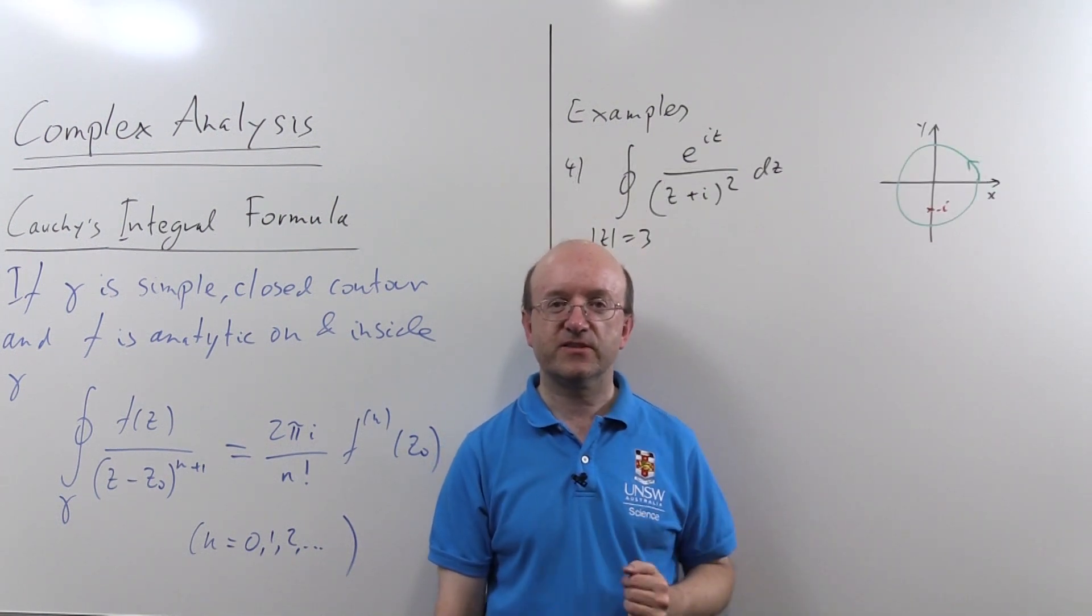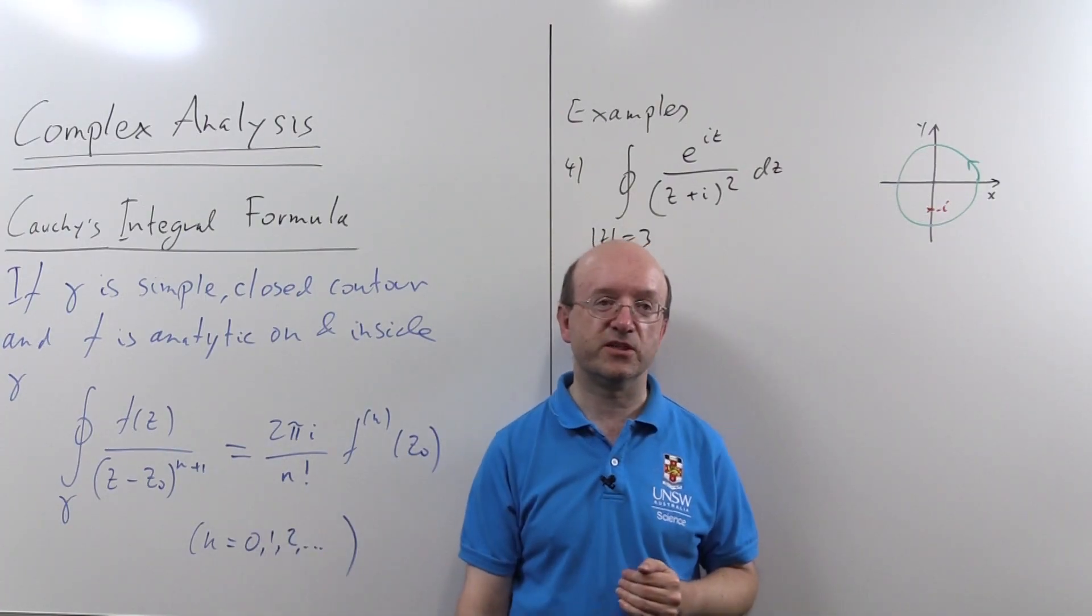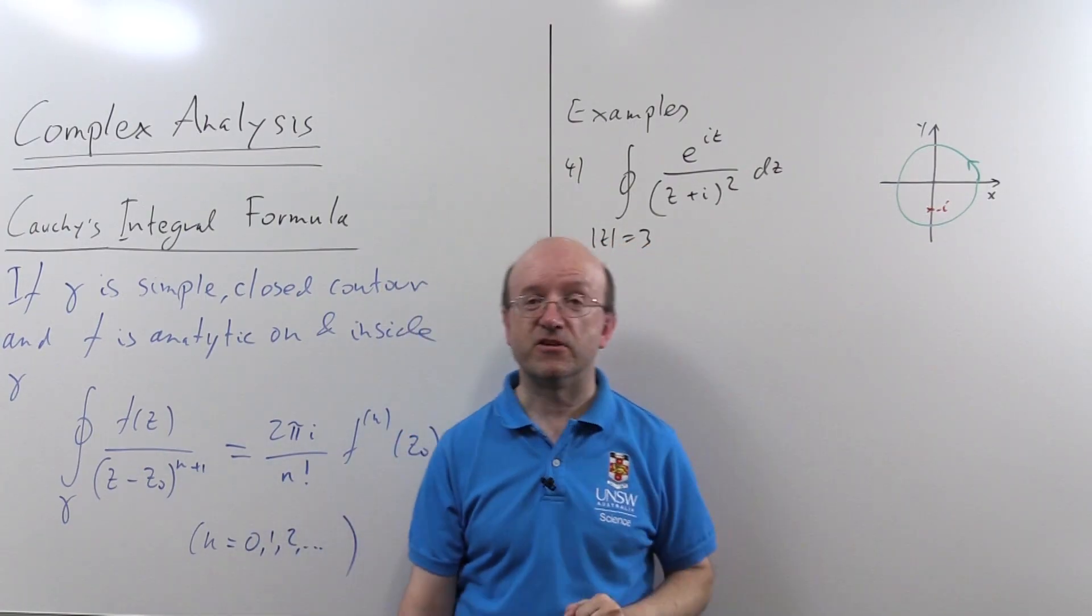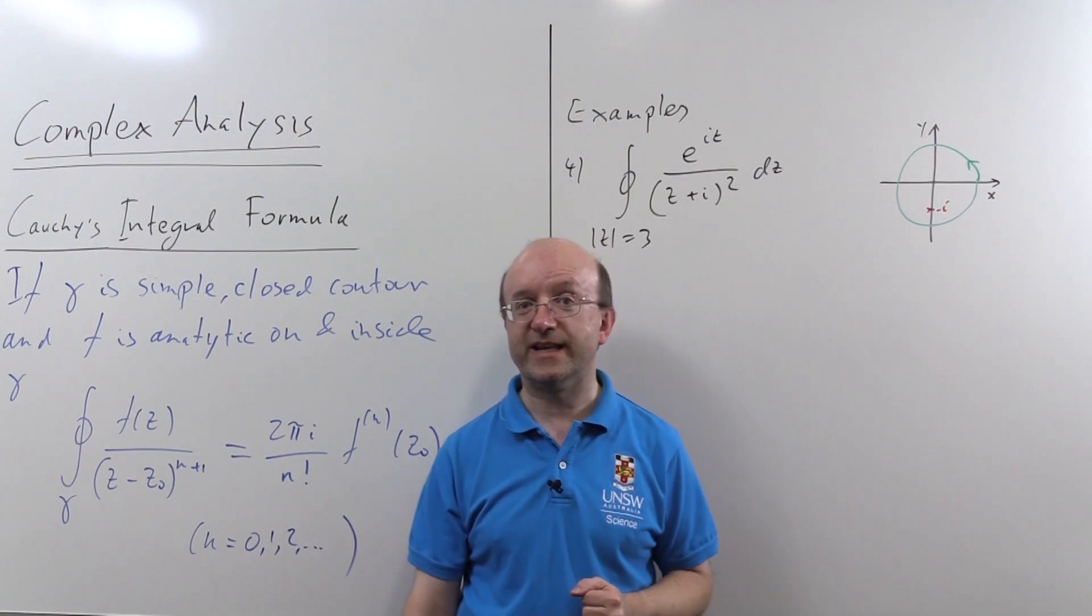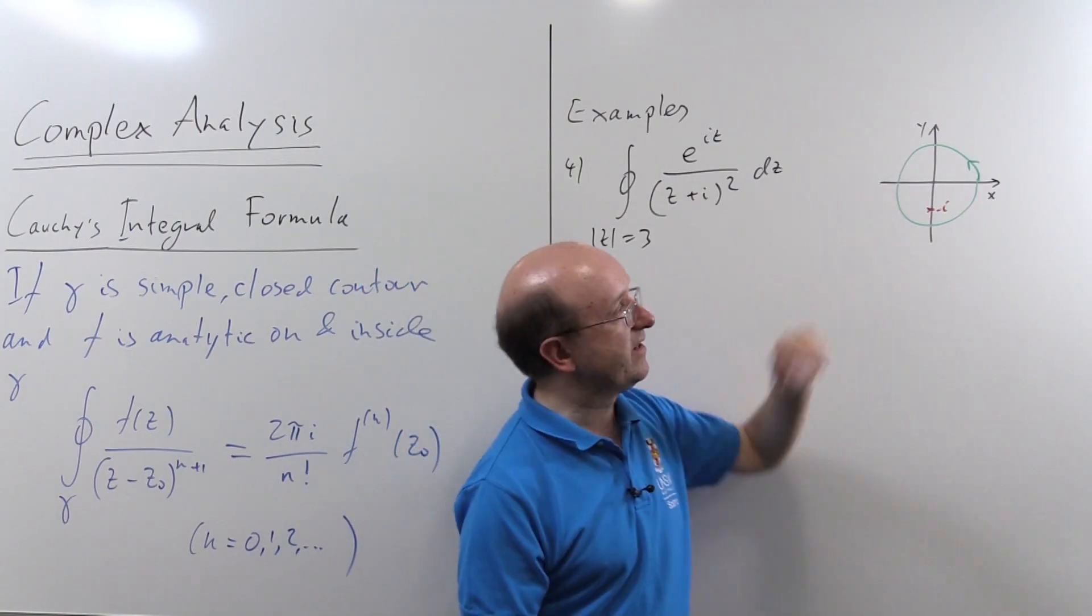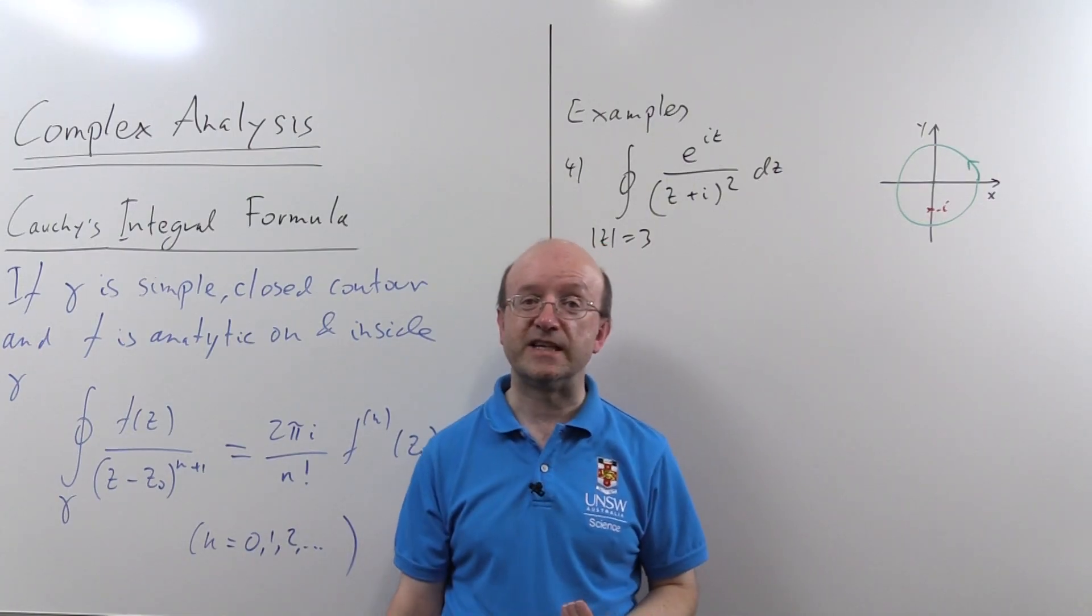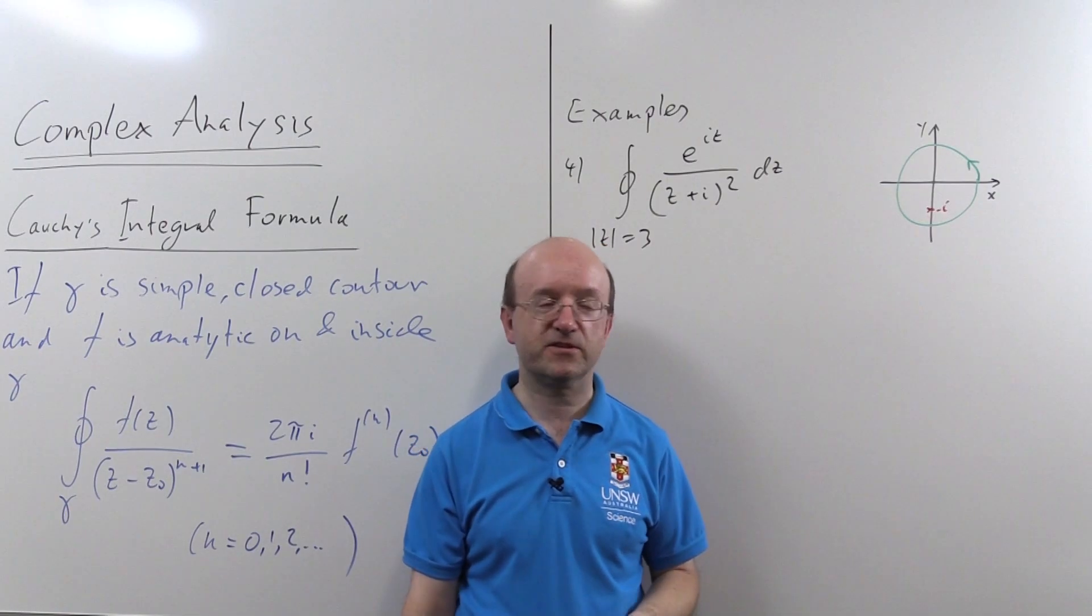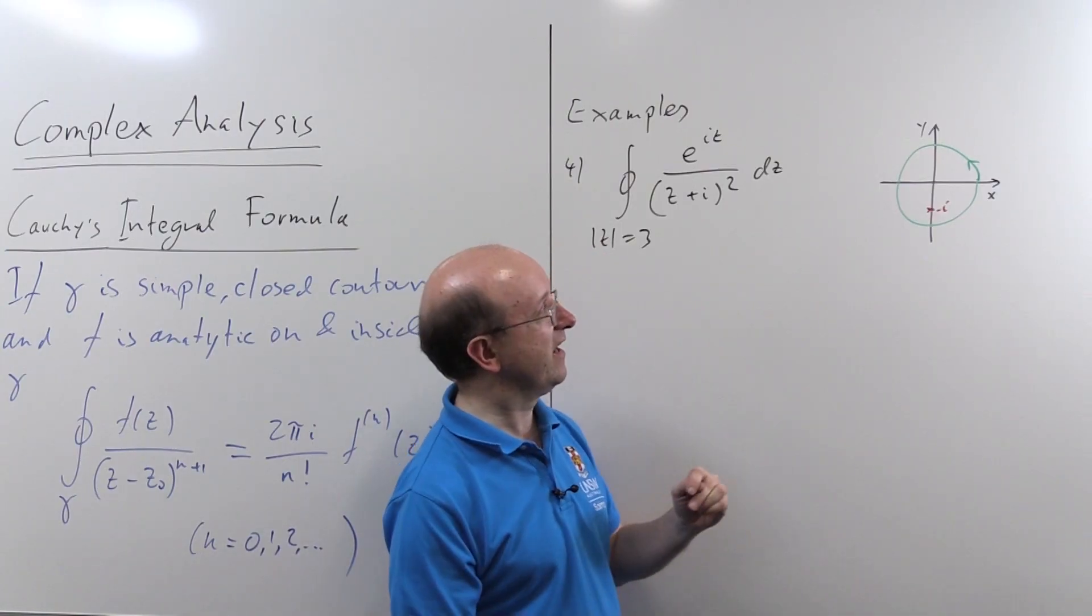Okay, in this last example, I'm going to do one where we do actually have to do some differentiation, because if you can see, I've got a z plus i squared here on the denominator, so this is not n equals 0 like the previous cases. But otherwise, it's a very similar integral. In fact, if you look, this is exactly the same picture, really, that I had for the first example, with a single singularity at minus i, and the contour going once around it.